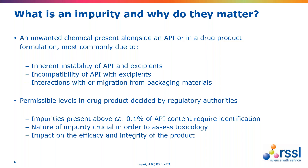Instabilities between the API and excipients are important to understand. Additionally, interactions with or migrations from packaging materials — extractables and leachables — also generate impurities within a product that need to be investigated and characterized. Regulatory authorities have put in place rules within the pharmaceutical industry such that certain impurities greater than 0.1% relative to the API require identification. Depending on the toxicity of the compounds, further investigation may be needed, and these impurities may also have a potential impact on the efficacy and integrity of a product.